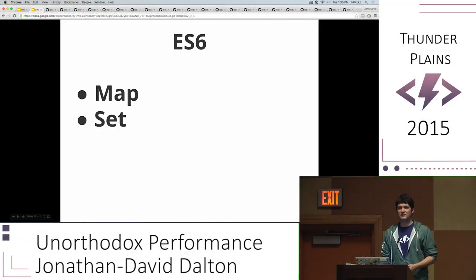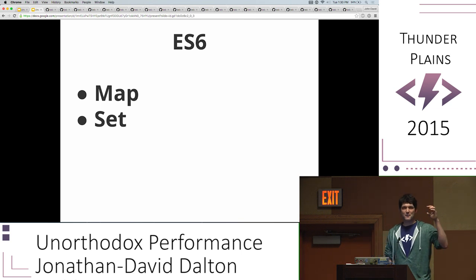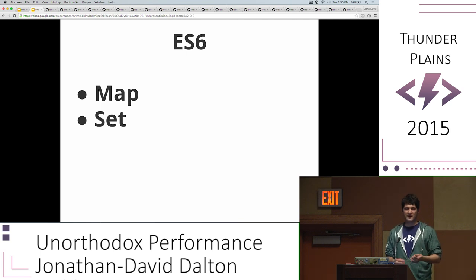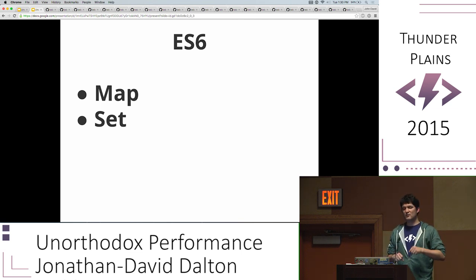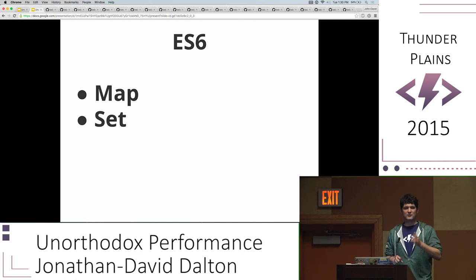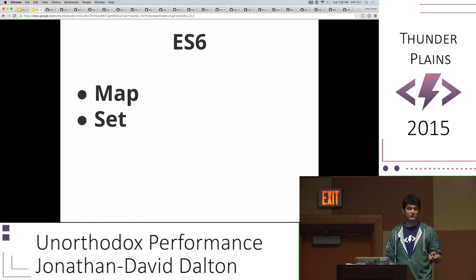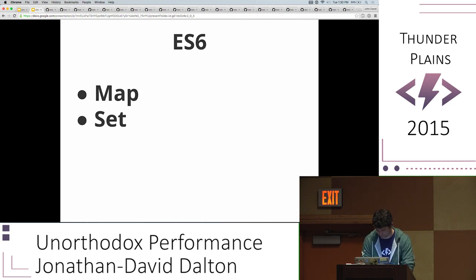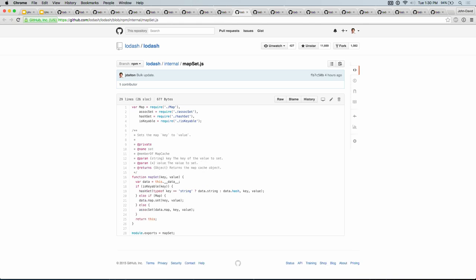Next up: Set. The reason I did Set second is because Set can be implemented as a Map. In Lodash 4 I'm not doing a native check for both Map and Set — I'm just using Map, and under the hood making it look like a Set. A Set is like a Map that stores unique values without a key-value association. To simulate a Set in Lodash, I use a Map where the key is the object being stored in the Set and the value is just `true`. Keys are unique, and in a Map your key doesn't have to be a string — it can be an object. I'm implementing Set by way of Map.